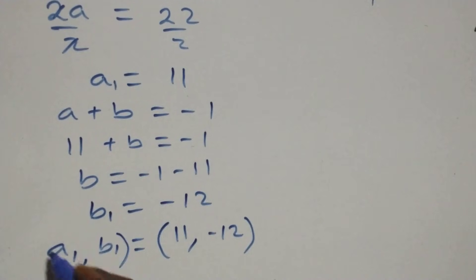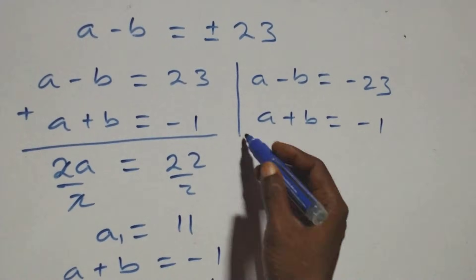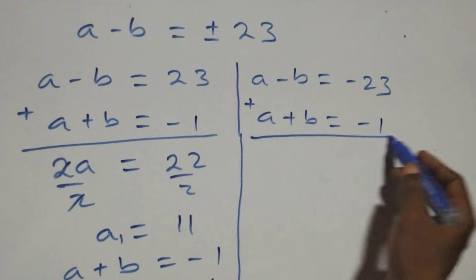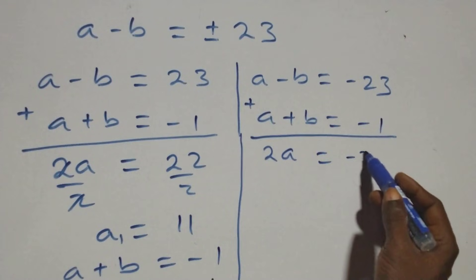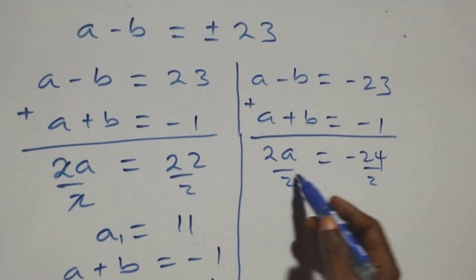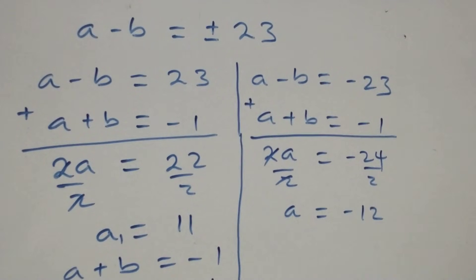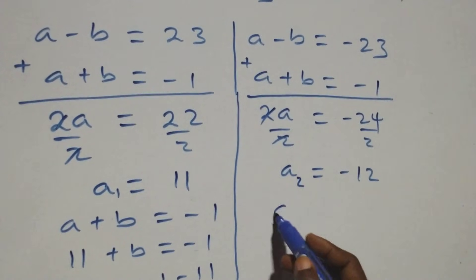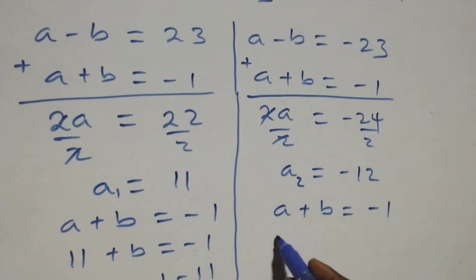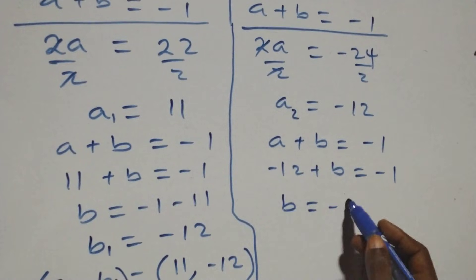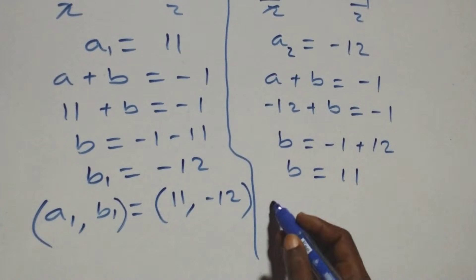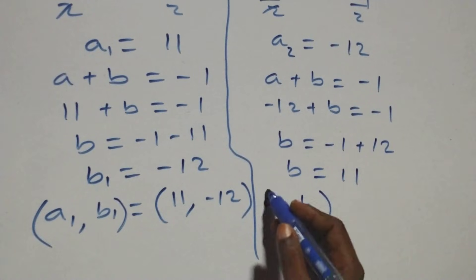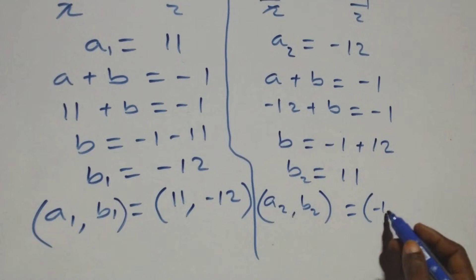For the second case, a minus b equals minus 23, and adding with a plus b equals minus 1: 2a equals minus 23 minus 1 equals minus 24, so a equals minus 12. We call this a2 equals minus 12. Substituting into a plus b equals minus 1: minus 12 plus b equals minus 1, so b equals minus 1 plus 12, which gives b equals 11. The second solution is (a2, b2) equals (minus 12, 11). These two solutions are interchanged — the value of a in the first is the value of b in the second, and vice versa.